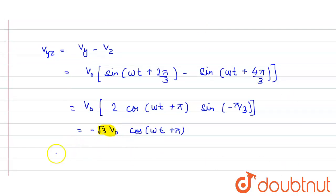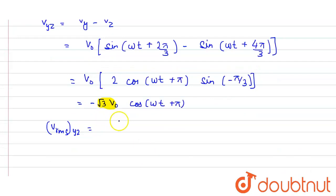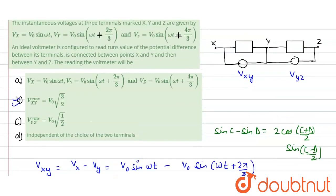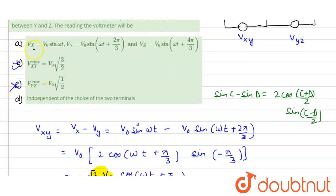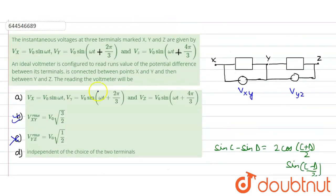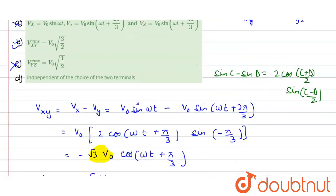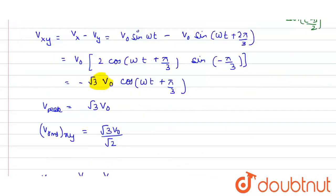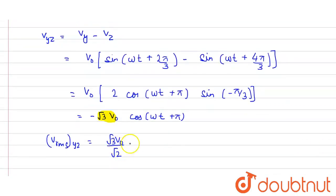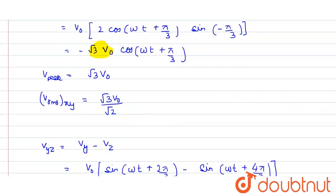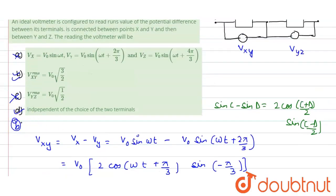So the RMS value for Vyz = V_peak / √2 = √3·V₀ / √2, the same as Vxy. The RMS value is independent of the choice of the two terminals. So the RMS readings are the same for both pairs. The correct options are B and D. Hope you understood the solution. Thank you.